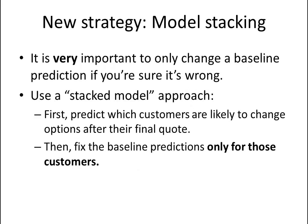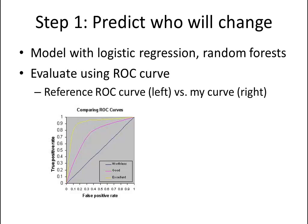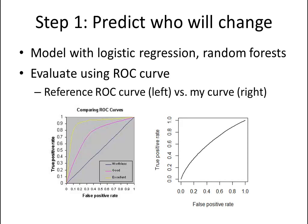It's very important to only change a baseline prediction if you're sure it's wrong. So I decided to use a stacked model approach: first, predict which customers are likely to change options after their final quote, and then second, fix the baseline predictions only for those customers. I modeled this with logistic regression and random forests, two common machine learning approaches, and evaluated the model using an ROC curve. The reference ROC curve shows that a yellow line means excellent, a pink line means performing well, and a blue line means worthless. As you can see, my model was basically worthless.